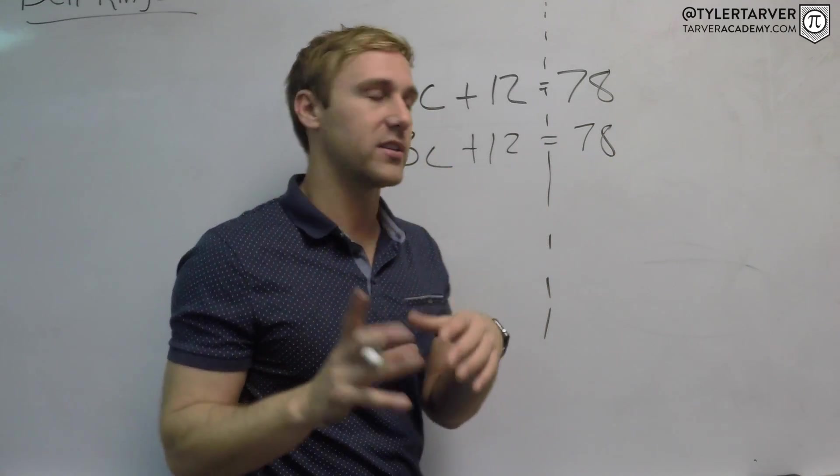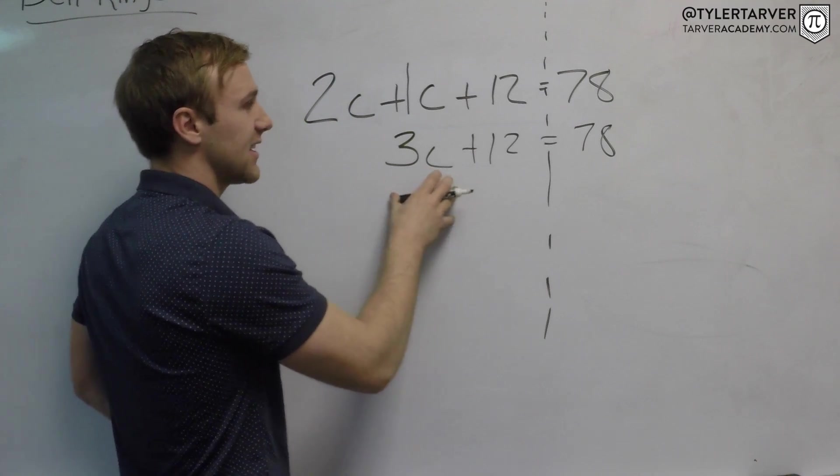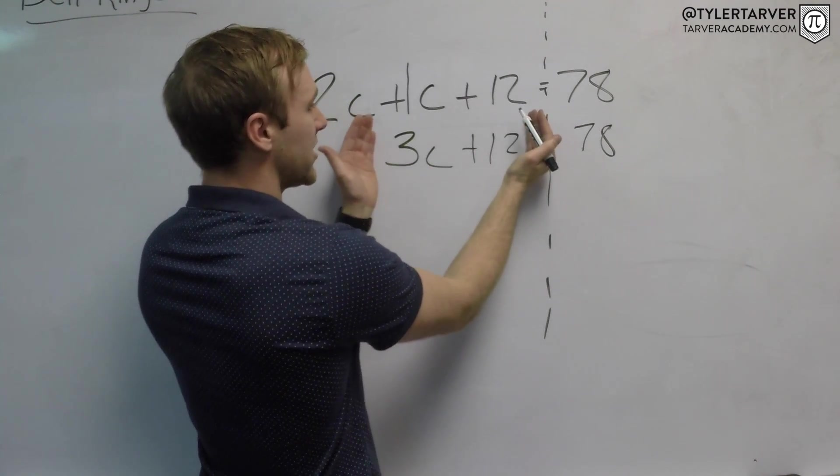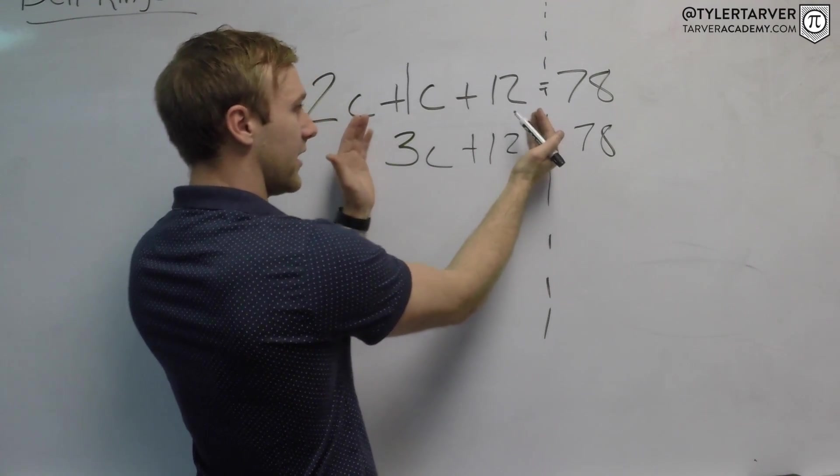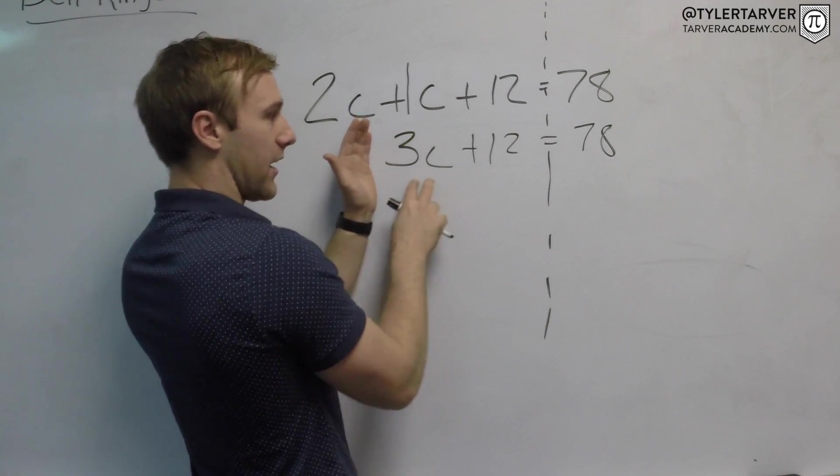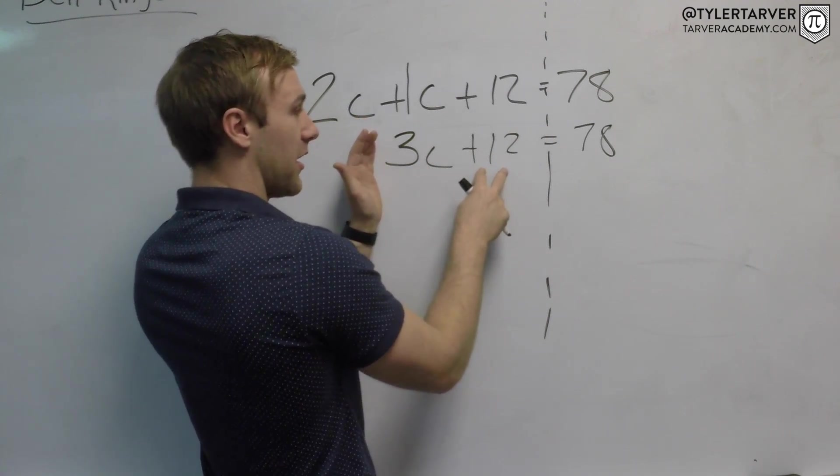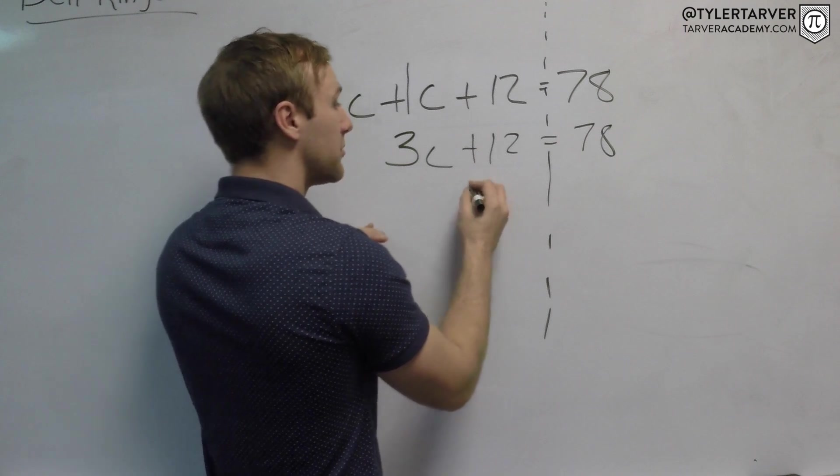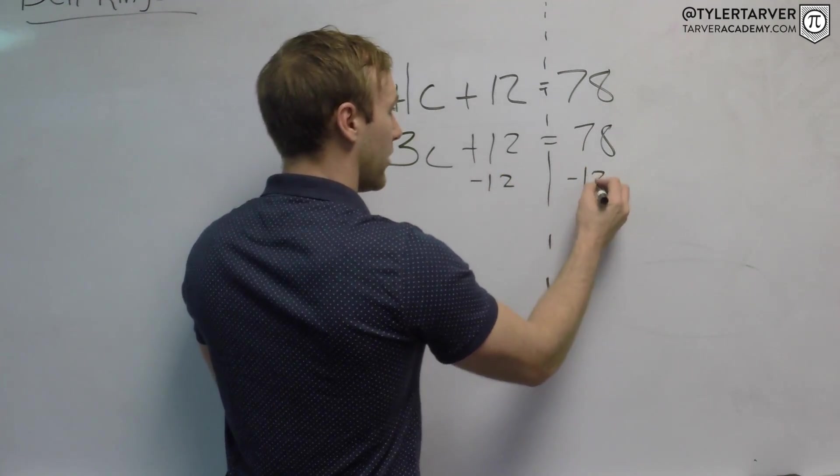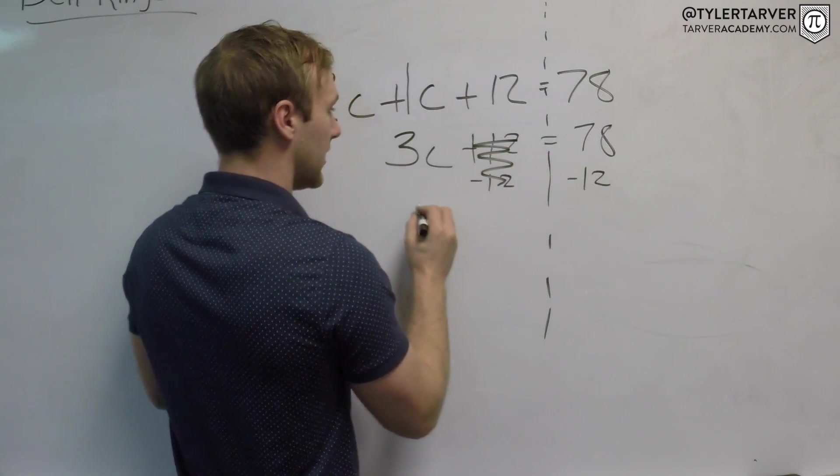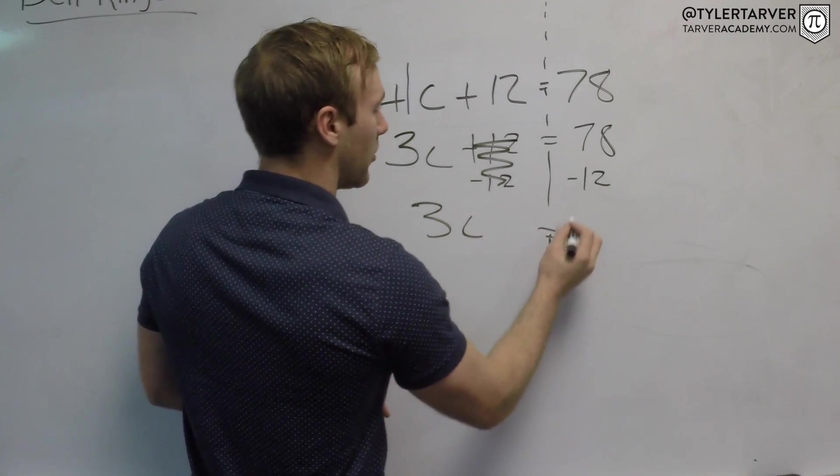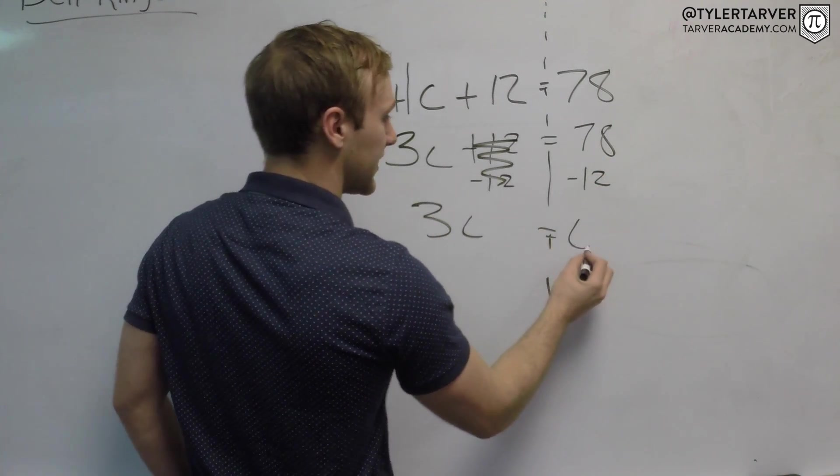Next, you get C by itself when you get rid of what's furthest away from the C on this side of the equal sign. The three and the C are hugging over here, so I've got to get rid of the 12. What's the opposite of adding 12? Subtracting 12. And I gotta do that from both sides. So 3C equals, and 78 minus 12 is 66.